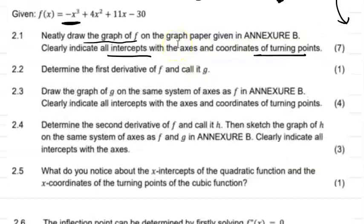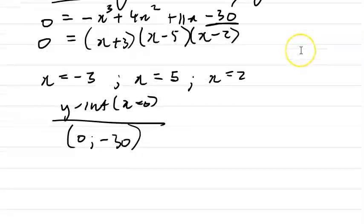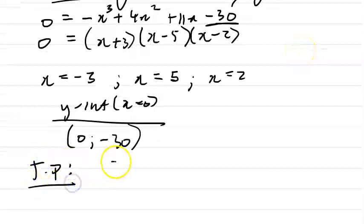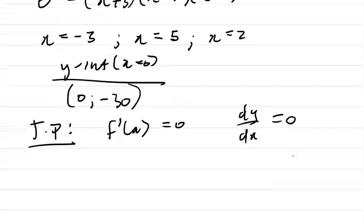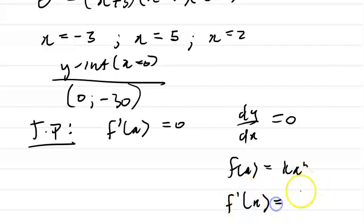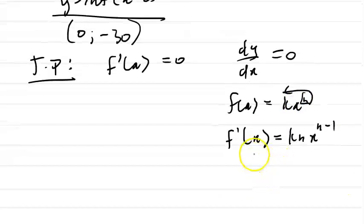Now we want the turning points. For turning points, you have to find the derivative of the function and equate it to zero, so f'(x) = 0. The derivative rule is: if f(x) = kxⁿ, then f'(x) = knx^(n-1) — multiply the coefficient by the power and subtract 1 from the power.